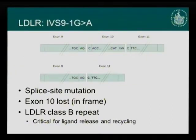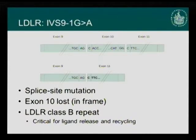At the genome level, this is a single base pair substitution in a splice site, leading to loss of exon 10 — an in-frame deletion of approximately 80 amino acids. These amino acids code for the class B repeat of the receptor, a domain important for ligand release and recycling, so the integrity of the receptor is likely disturbed by losing these amino acids.